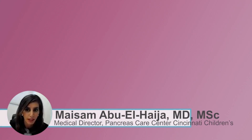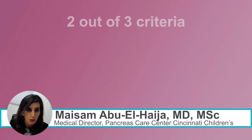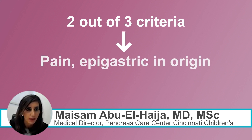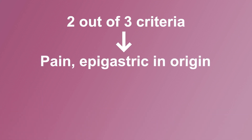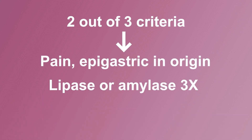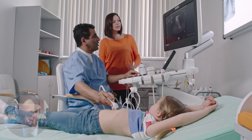Now that we know what it is, let's talk about diagnosis. Acute pancreatitis, by definition, is when the patient has two out of three criteria: pain that is classic, epigastric in origin; lipase or amylase three times the upper limit of normal; and imaging findings.